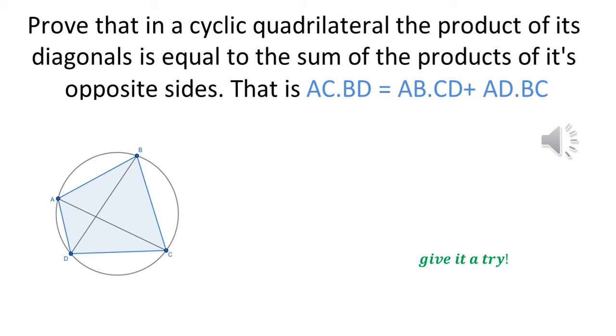One has to prove that in a cyclic quadrilateral the product of its diagonals is equal to the sum of the products of its opposite sides. As you can see in the diagram, we have to show that AC times BD is equal to AB times CD plus AD times BC.